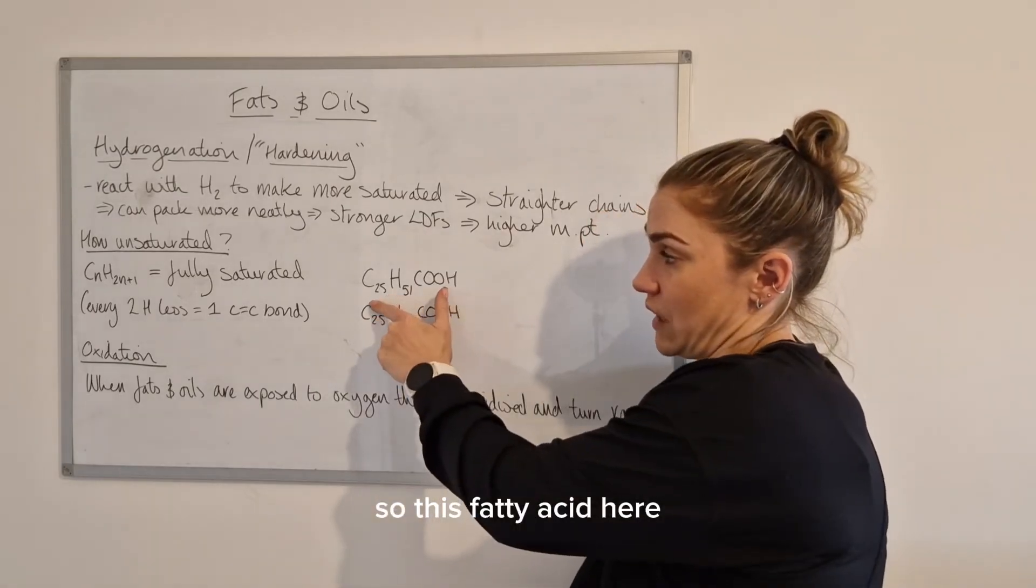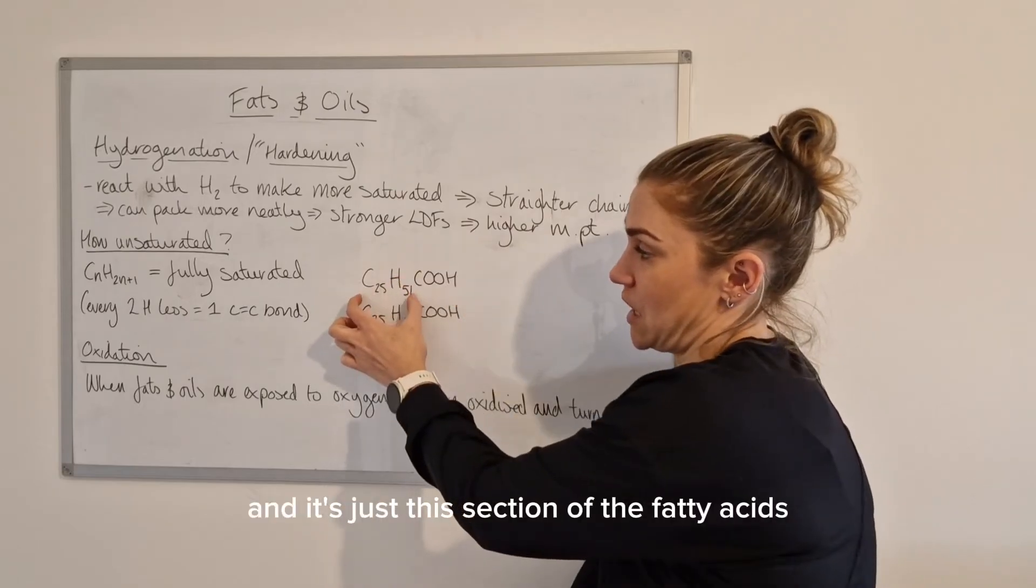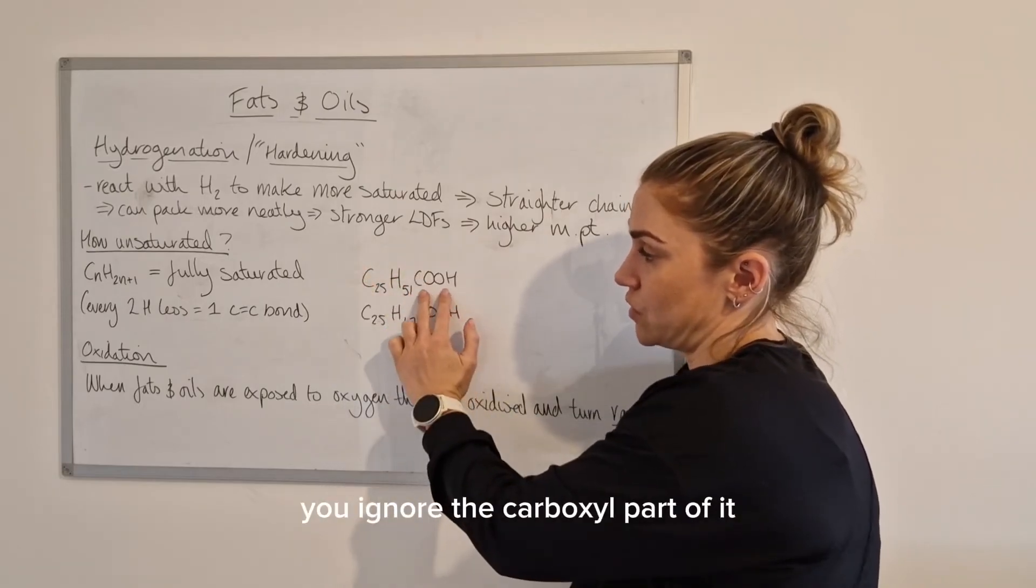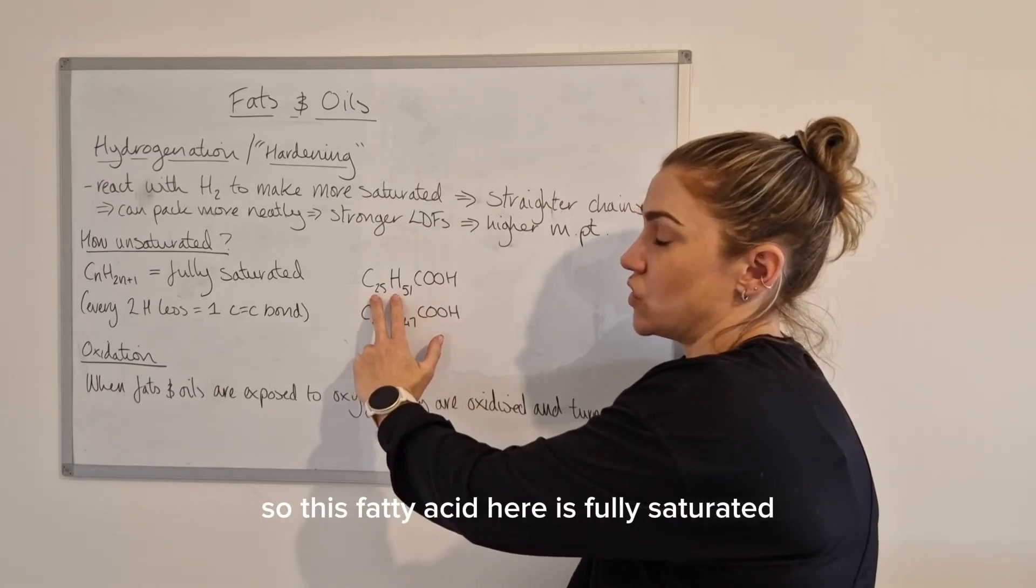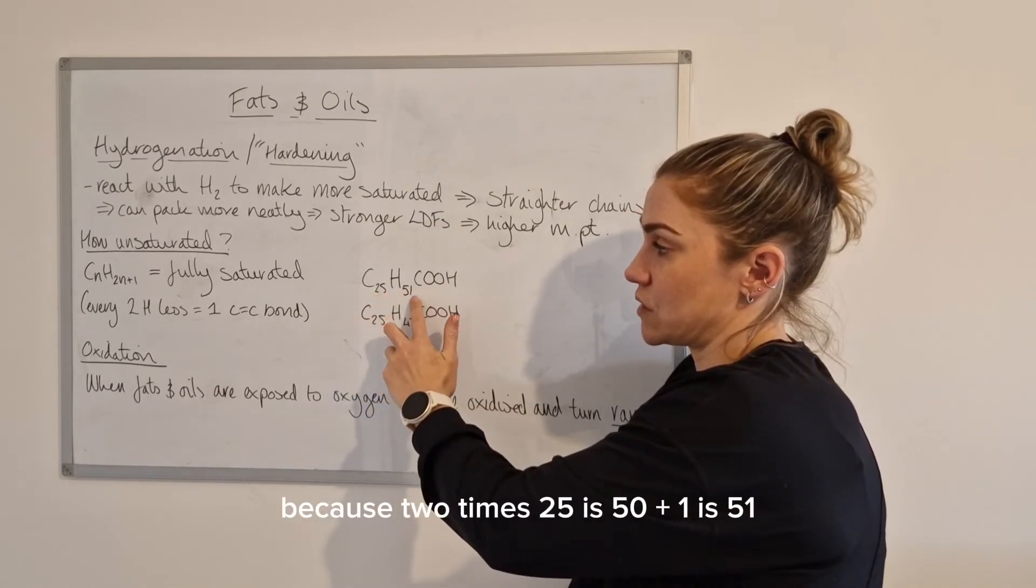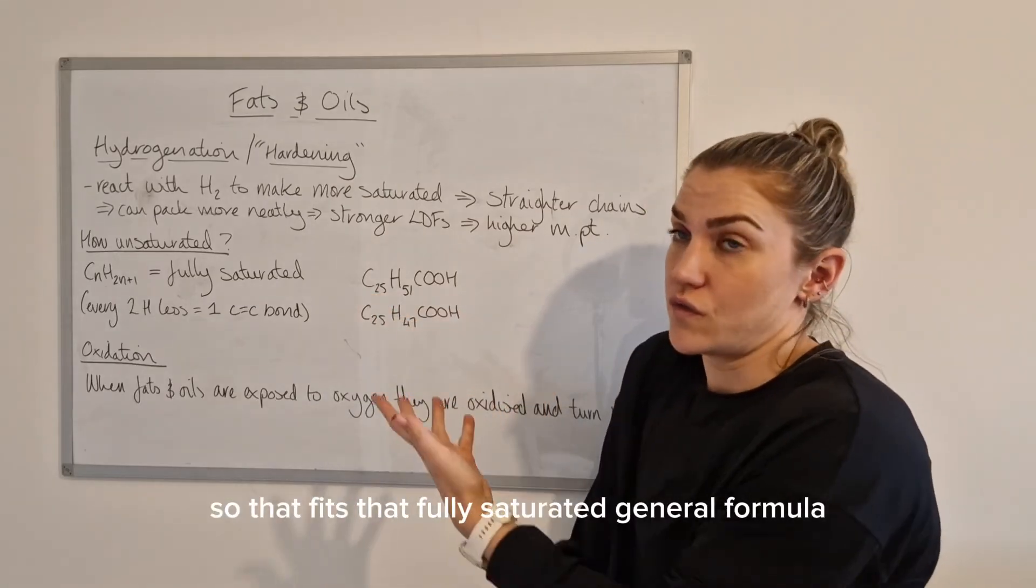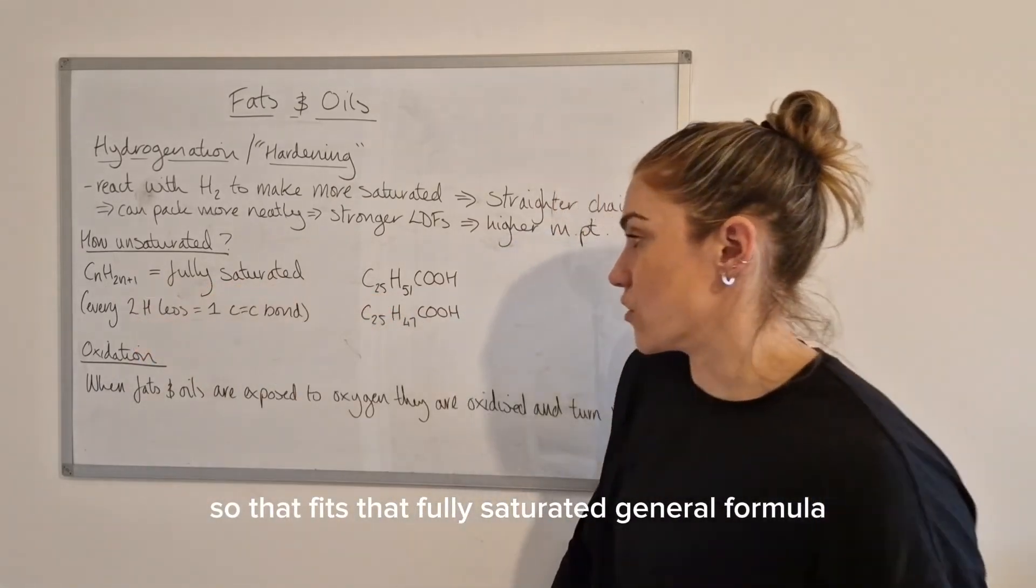If the fatty acid is fully saturated, then it will fit CnH2N+1. This fatty acid here - and it's just this section of the fatty acid, you ignore the carboxyl part - is fully saturated because 2 times 25 is 50 plus 1 is 51. So that fits that fully saturated general formula.